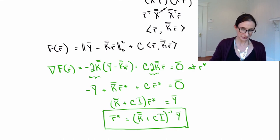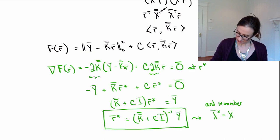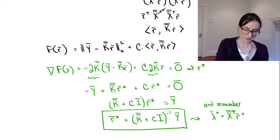And then remember, we have to get back to lambda star, but that's easy because we know that lambda star is just X transpose times r star. So I'll just write, and remember, lambda star is X transpose times r star. Okay.